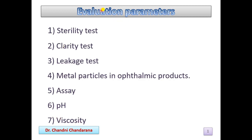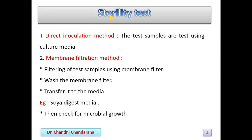These evaluation parameters are there because we have to check that our essential requirements are fulfilled or not. Now, the first test is the sterility test. The sterility test can be performed by two methods: first is the direct inoculation method, and second is the membrane filtration method.